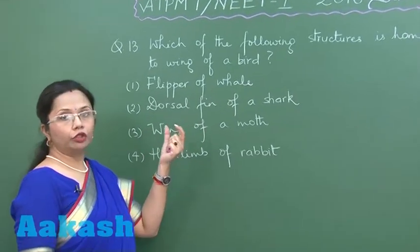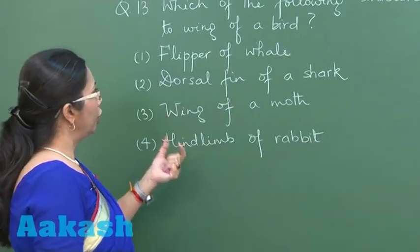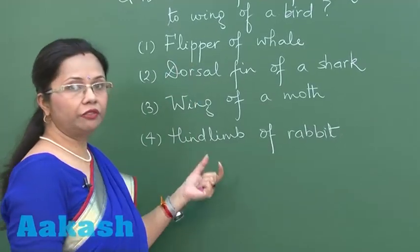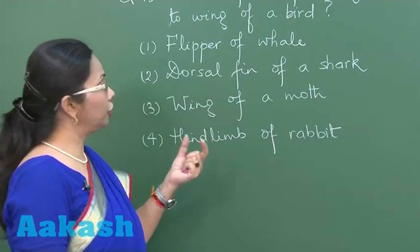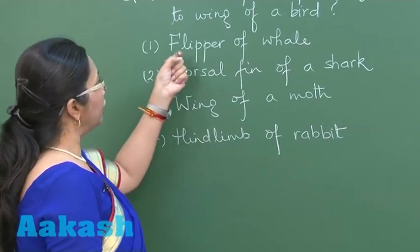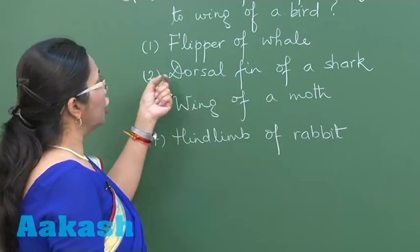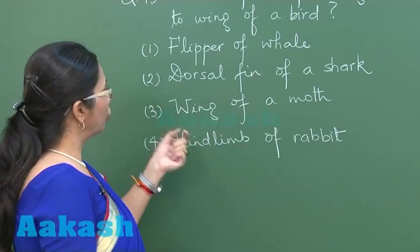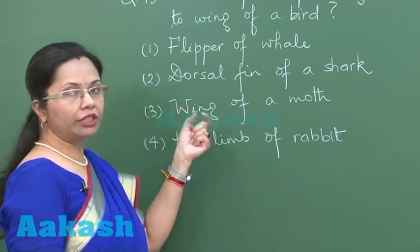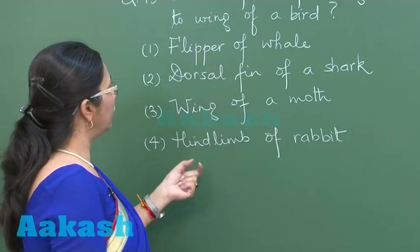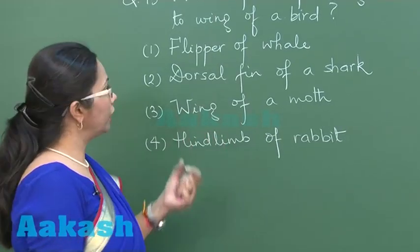Now wing of the bird is modification of forelimb. So out of these four choices we will see which is a modification of forelimb. Here flipper of whale, that is forelimb modified. Dorsal fin of a shark, that is just skin outgrowth. Wing of a moth is again outgrowth from their body and hind limb is totally different.